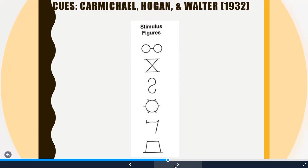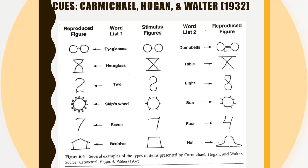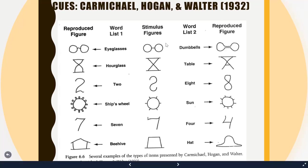A classic example is the Carmichael et al. study from 1932. Participants memorized stimulus figures and were then asked to draw them based on a word label. One group was given the label 'eyeglasses' — what would happen is people would bend the little line between the two circles, and sometimes draw the actual hook of an eyeglass onto the image. Contrast this with the group given 'dumbbells' — they don't put a bend in the middle; instead they elongate the center because dumbbells are further apart. People are reconstructing their memories based on the label.